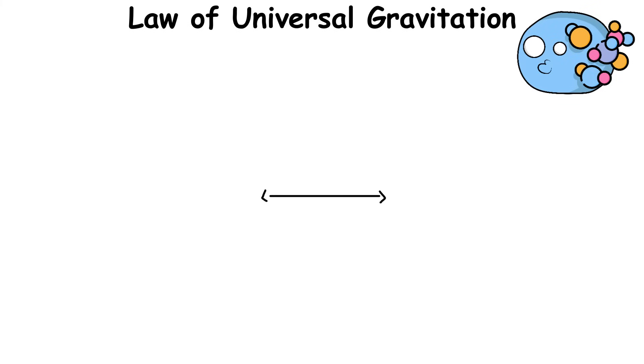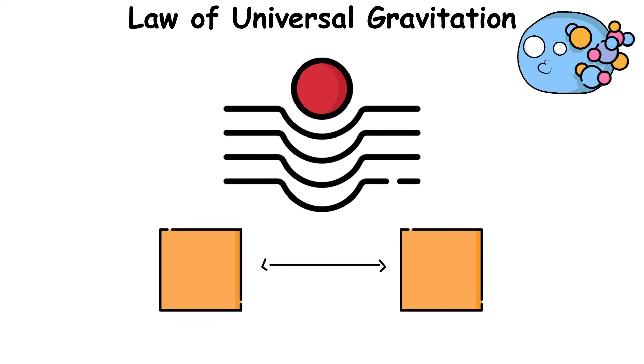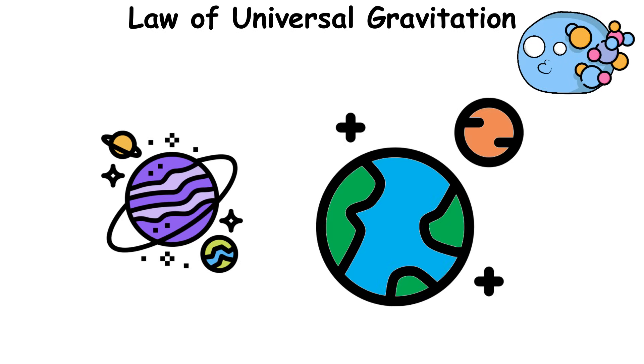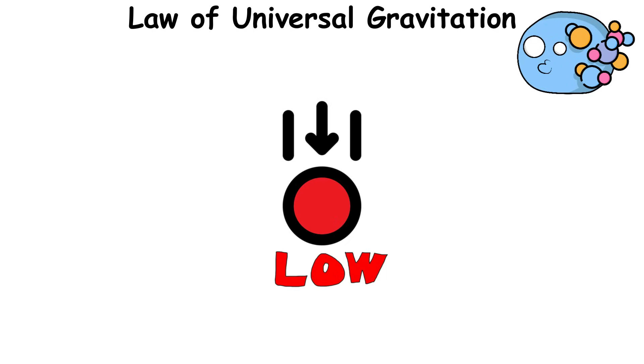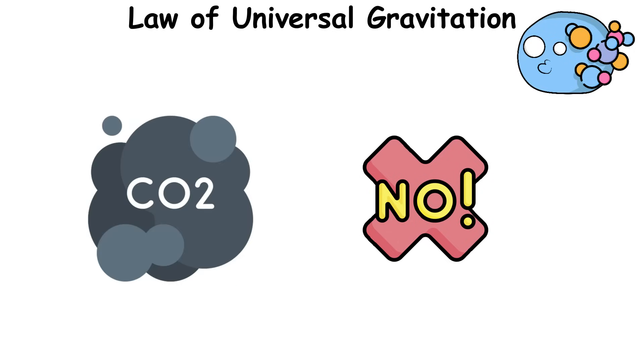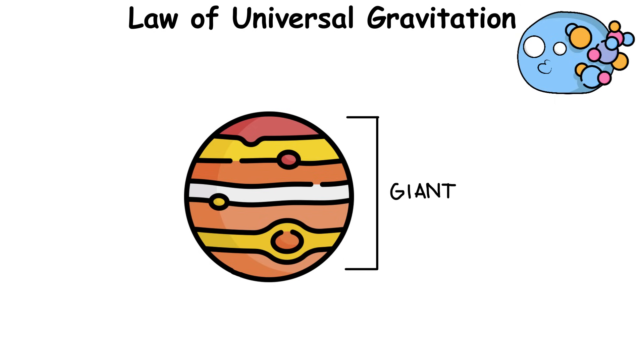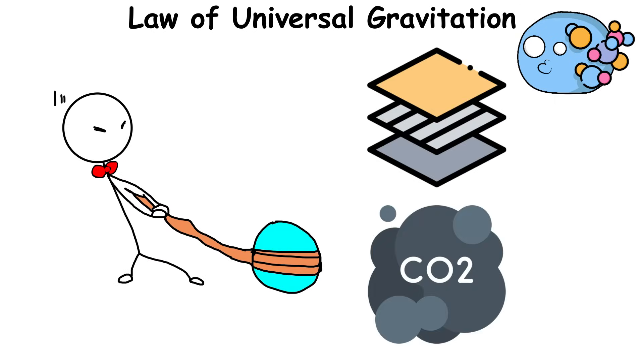Newton's law says that the distance between two objects also dictates the force of gravity they produce. This explains why the inner planets in our solar system are smaller than the outer planets. They have relatively low gravity and cannot attract large amounts of gas to their atmospheres. In contrast, planets like Jupiter are so giant that they produce enough gravity to pull more materials and gas toward them.